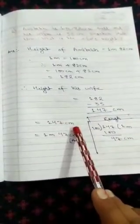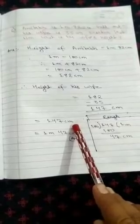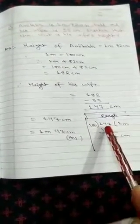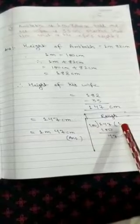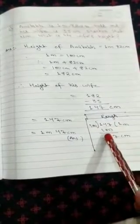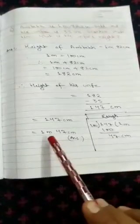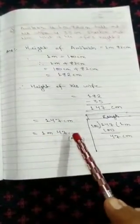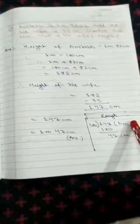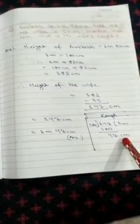Now 147 centimeters, you have to convert in meter and centimeter. For that, you have to divide 147 by 100. Now 100 ones are 100. After subtraction, you will get 47 as a remainder. So height of his wife will be 1 meter 47 centimeters. The quotient will be in meter and the remainder will be in centimeter.